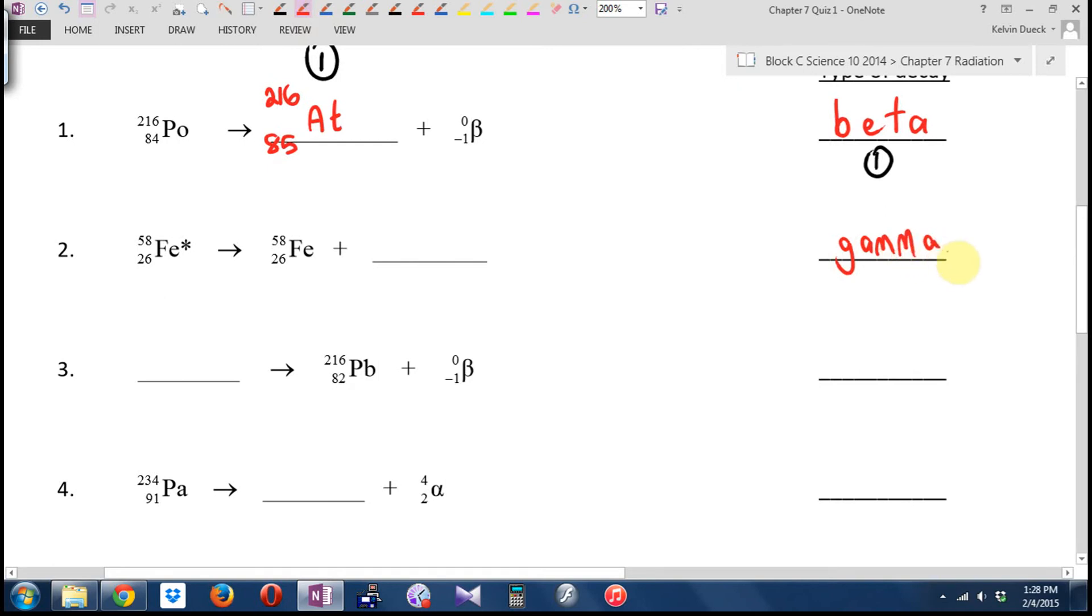And I guess this time I'm just filling in the particle that was given off, which is a gamma ray, which has zero and zero. Double check, 58, 58 plus zero is 58. 26, 26 plus zero is 26.